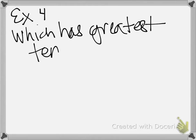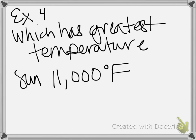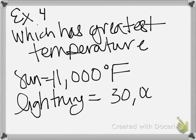We're going to go back to that temperature equation that I gave you. Example 4. I want to know which has the greatest temperature. I want you to guess first. Which has the greater temperature? The sun that's at 11,000 degrees Fahrenheit or lightning that's at 30,000 degrees Celsius. First take a guess. What do you think?